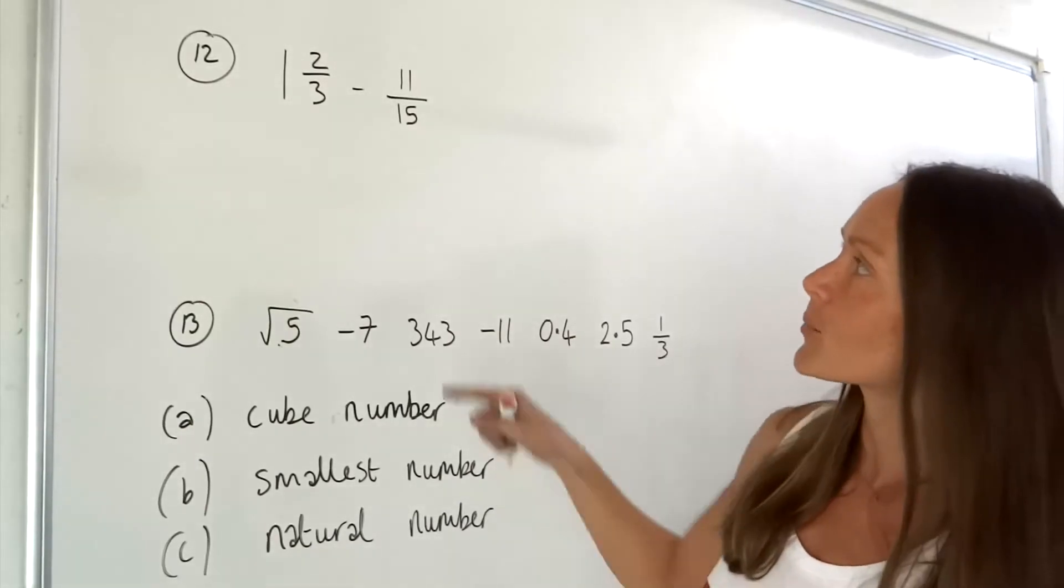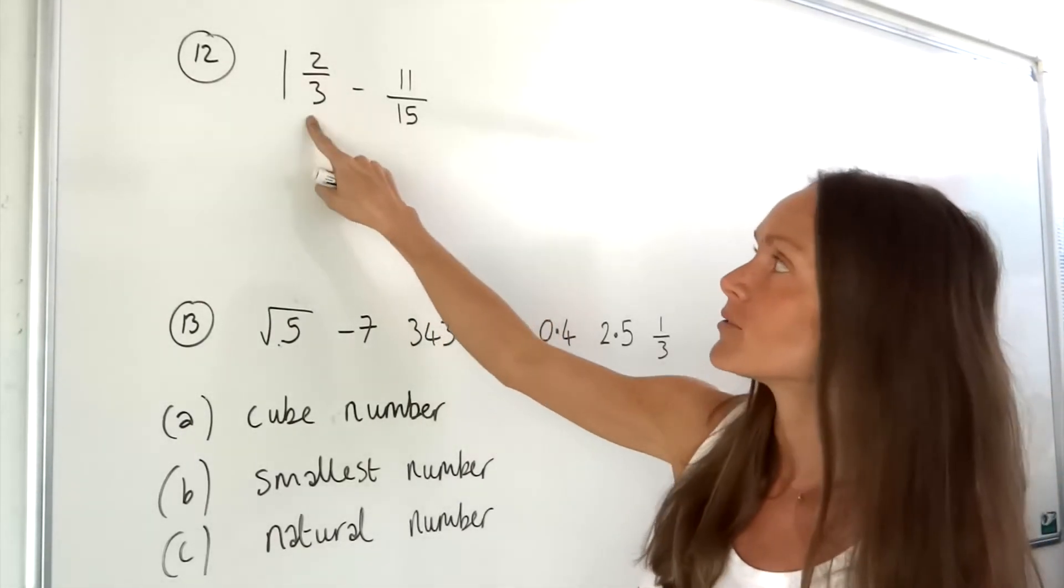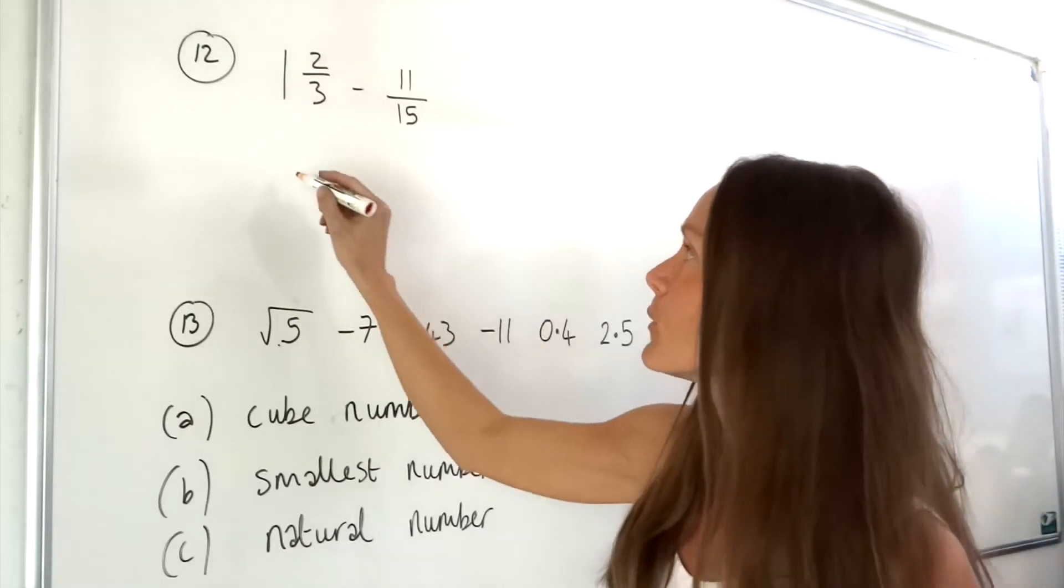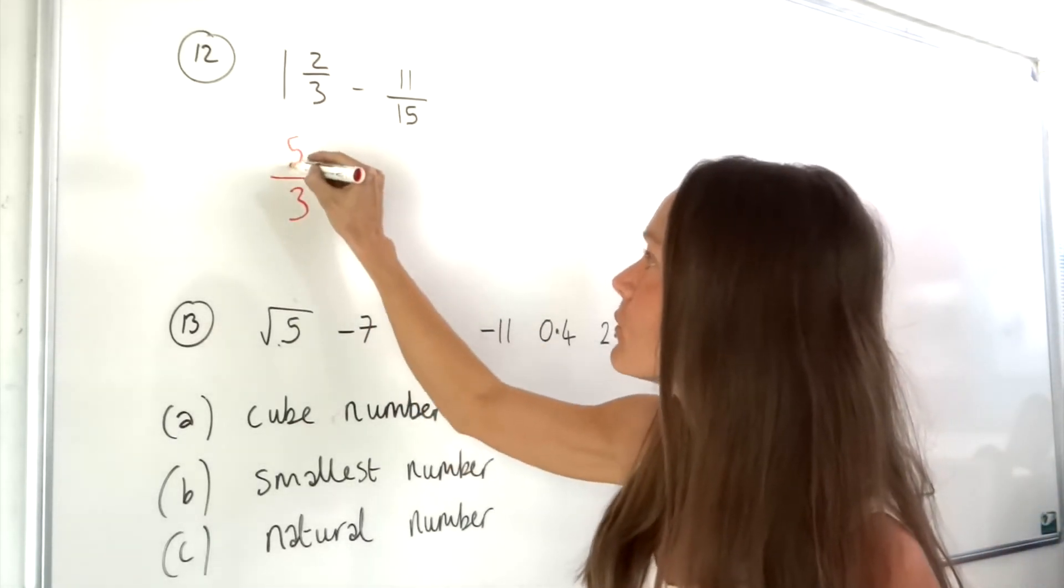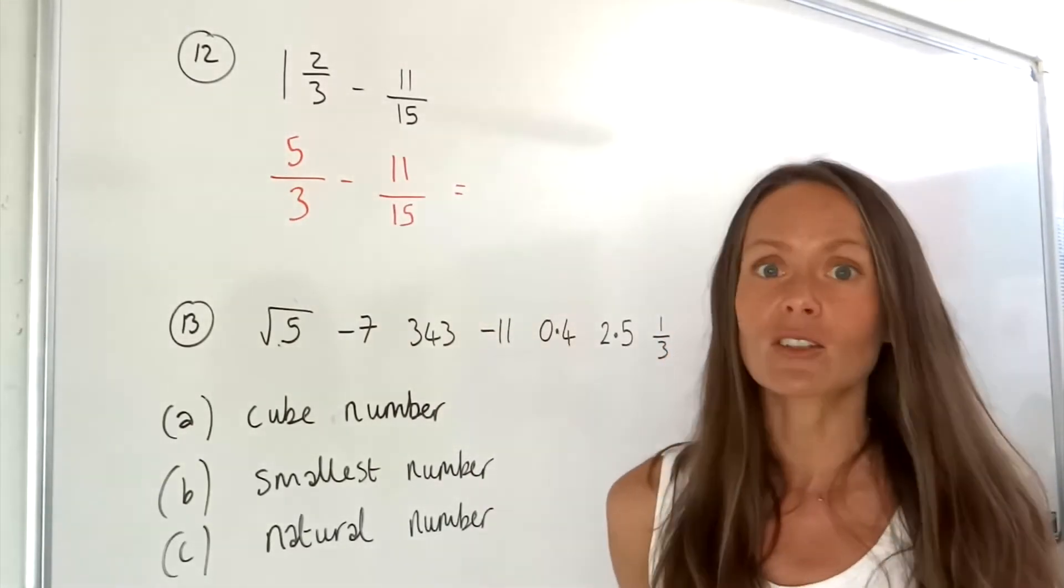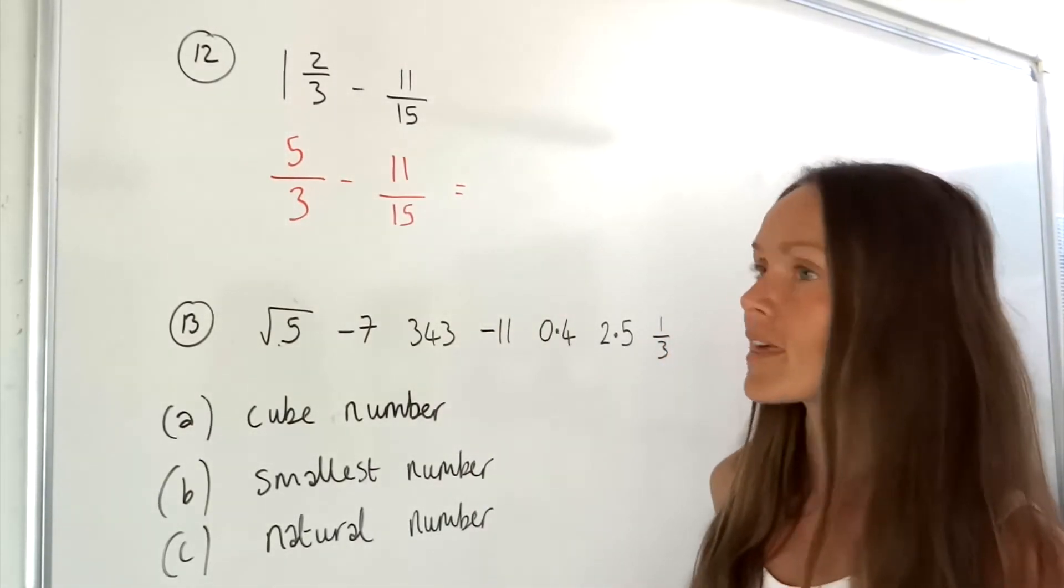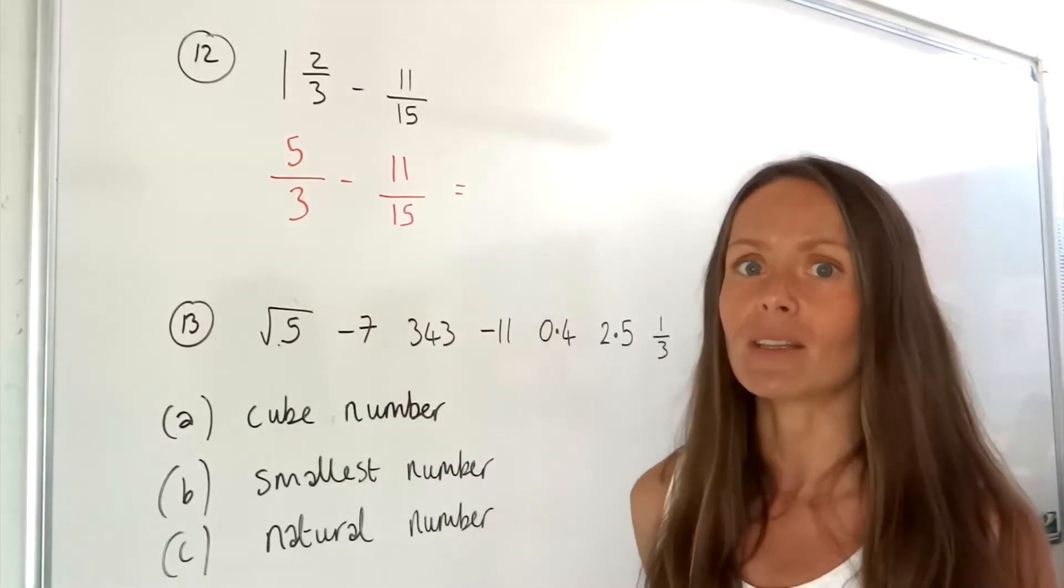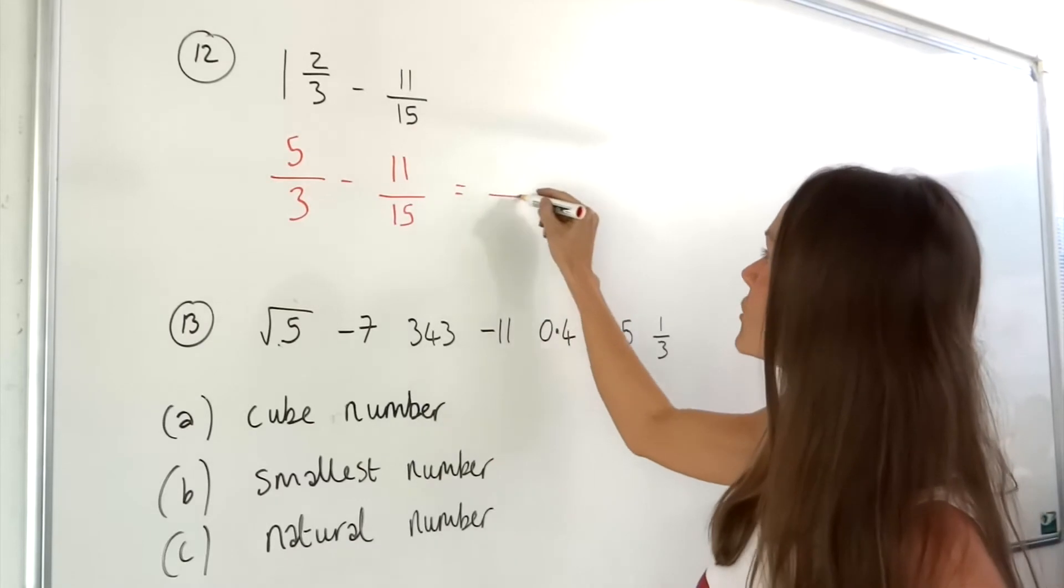Before we can subtract these two fractions we have to turn this mixed number into an improper fraction. If I do that first I get 5 over 3. Now before we can subtract two fractions we have to make sure there is a common denominator, so the number underneath must be the same first.